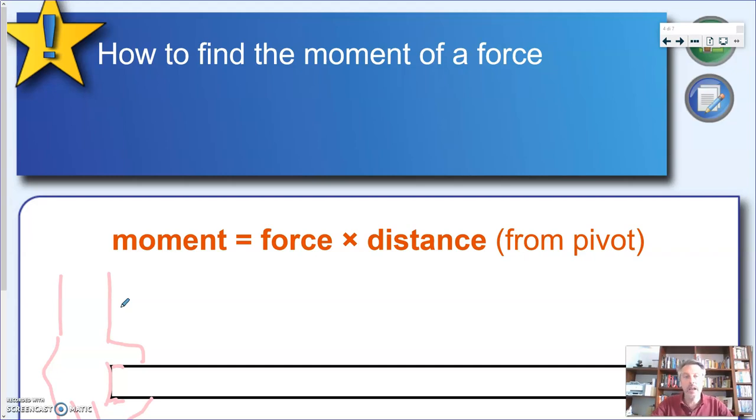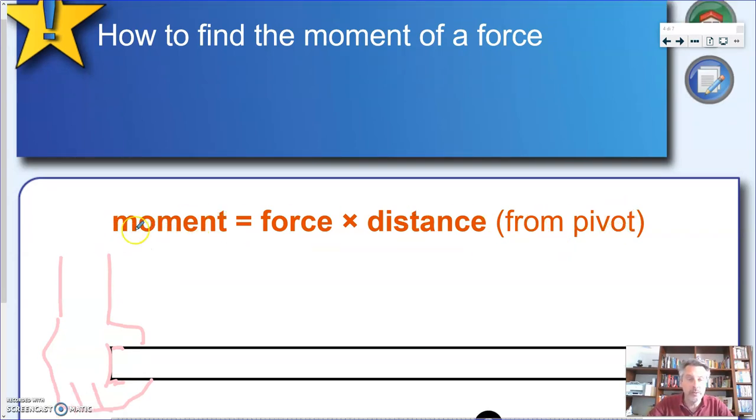And that formula is what you see over here. The moment of a force is defined by the product, you see multiplication here, between the force you're applying and the distance from the pivot.